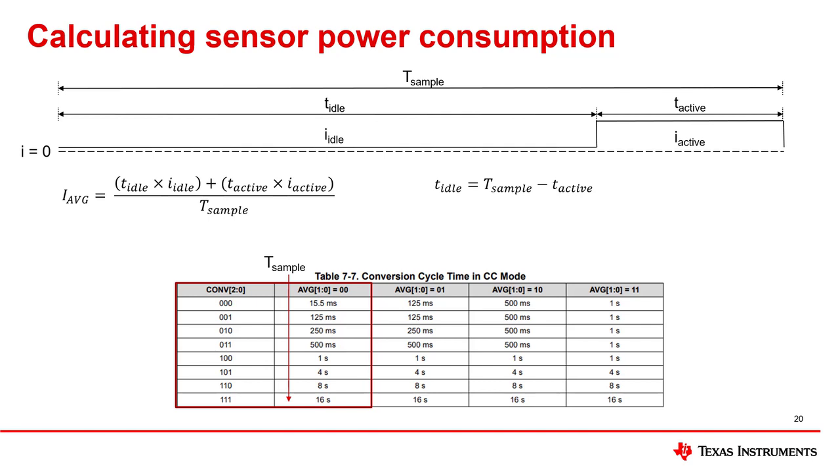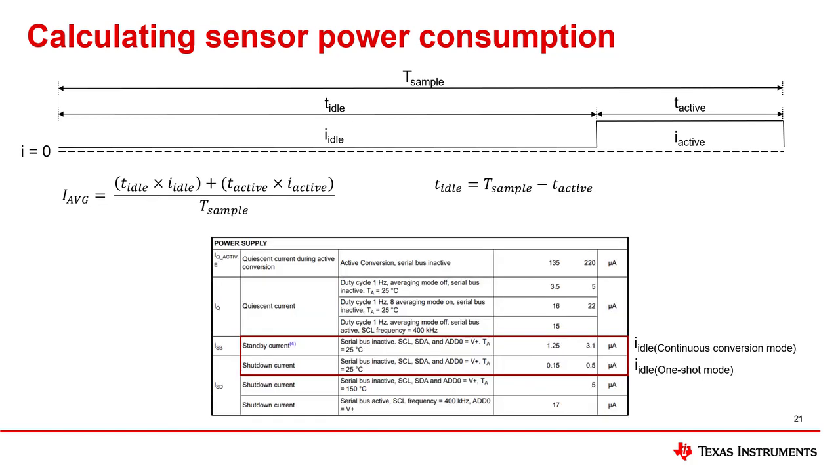Similarly, we can alter the idle time by increasing or decreasing the total conversion cycle time, t-sample. In this table from the TMP117 datasheet, we have the option to set the conversion cycle time as low as 15.5 milliseconds, up to as long as 16 seconds in continuous conversion mode. Also, some devices may allow us to change the idle current consumption depending on different configurations. For example, the TMP117 has two different idle modes, standby mode and shutdown mode. The device's idle mode is determined by whether the device is operating in continuous conversion mode or one-shot mode.